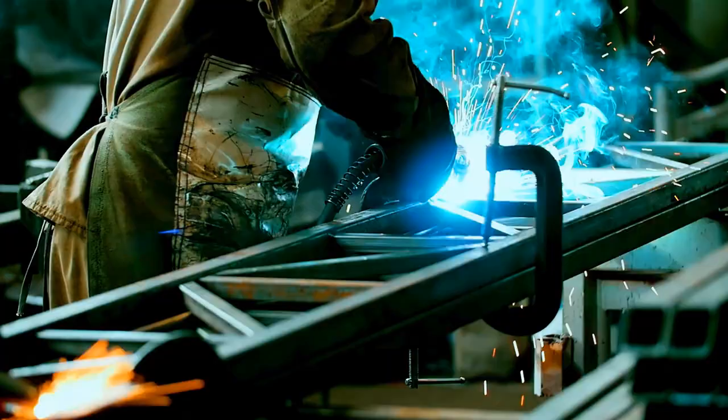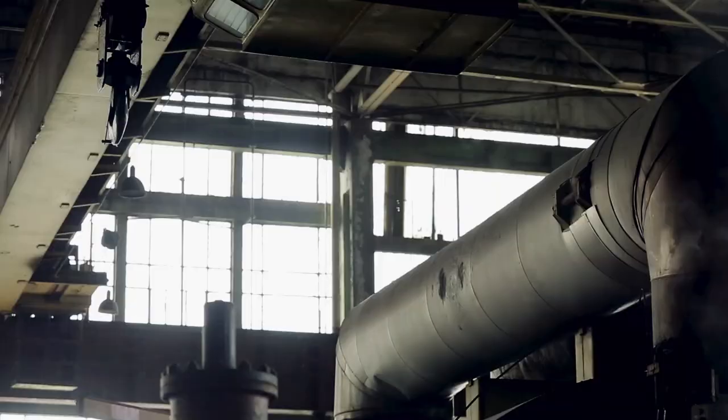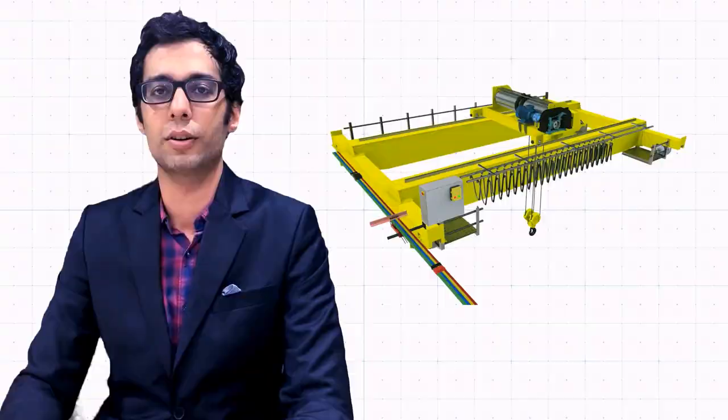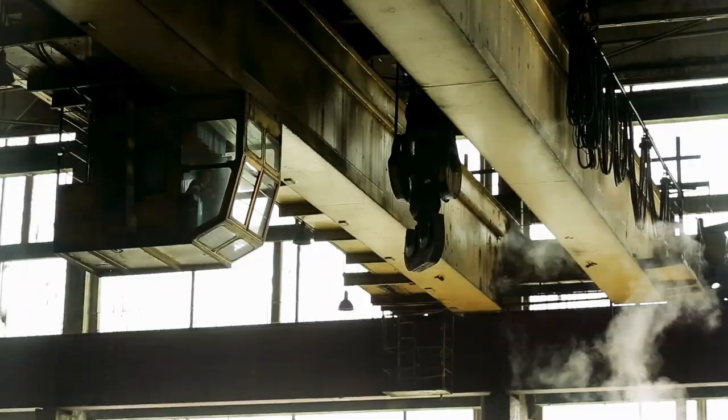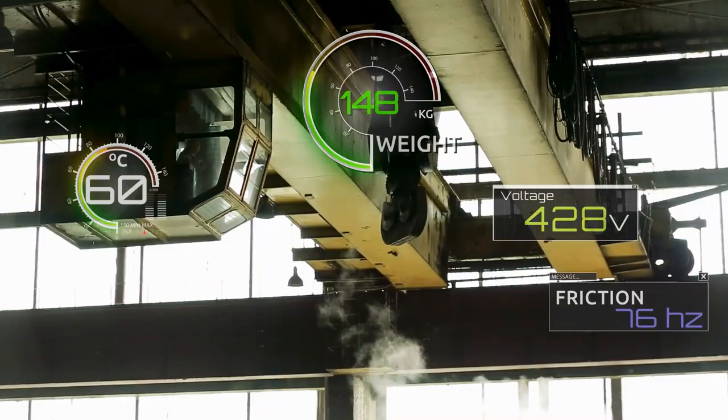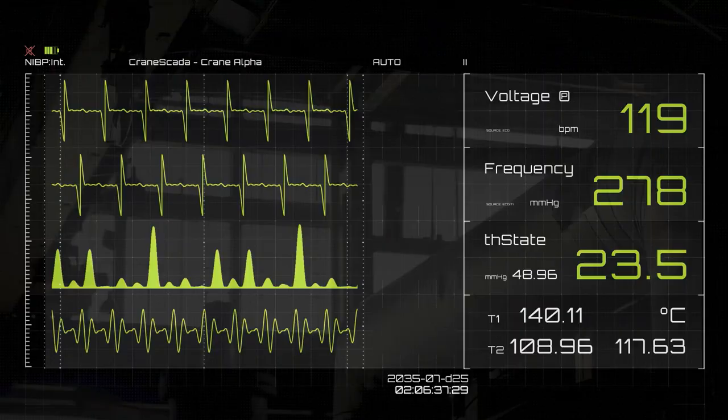Let me show you how you can predict a malfunction of an electric overhead crane. An electric overhead crane has thousands of unique parts and a lot of things can go wrong. Each problem in a crane will always give a signal before it arises. Let me introduce to you Crane Scada, the world's first industrial IoT platform for overhead cranes.